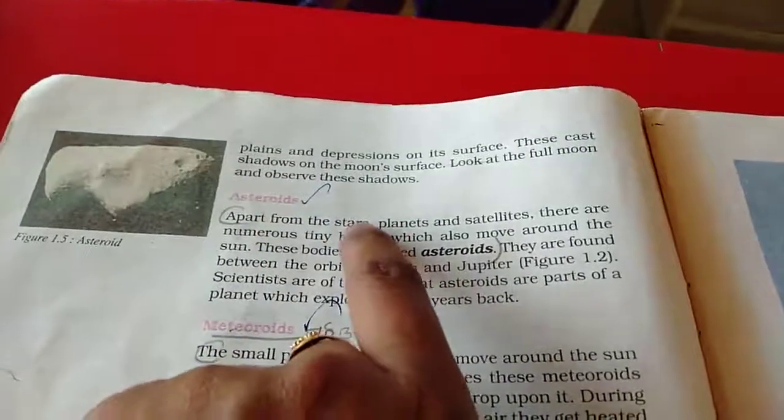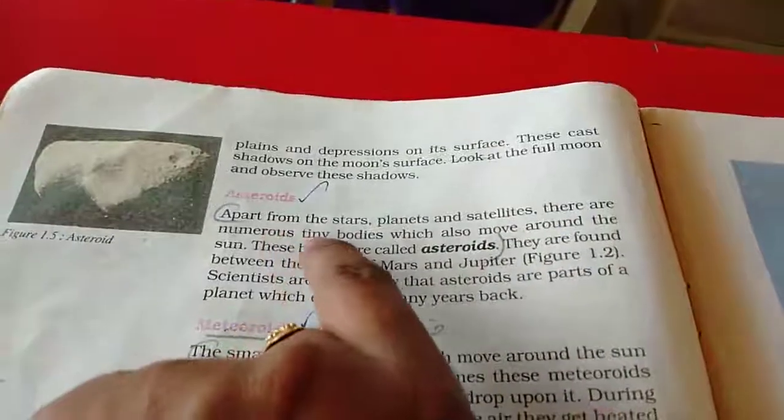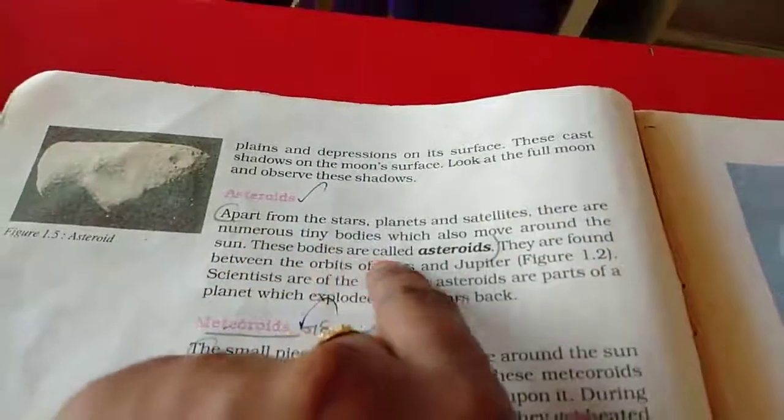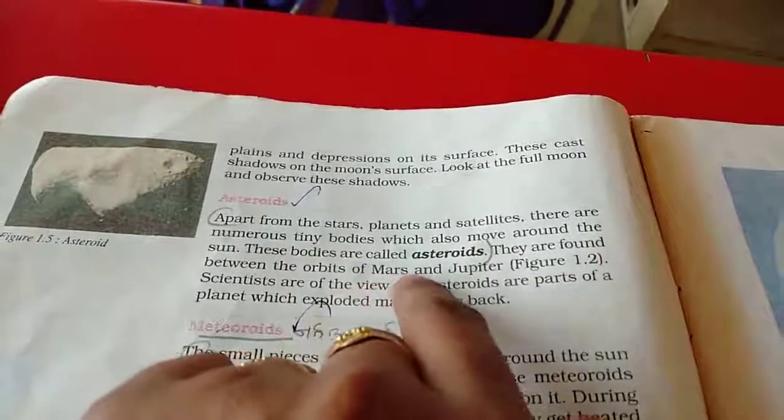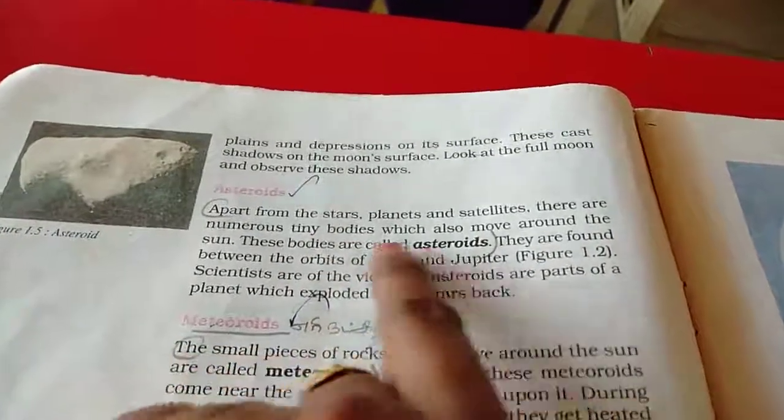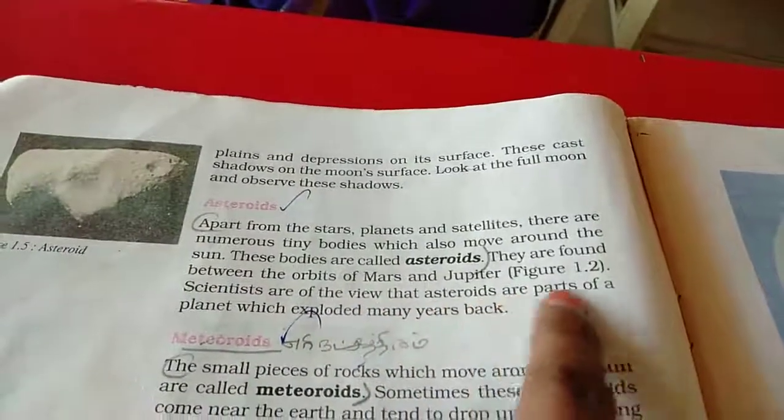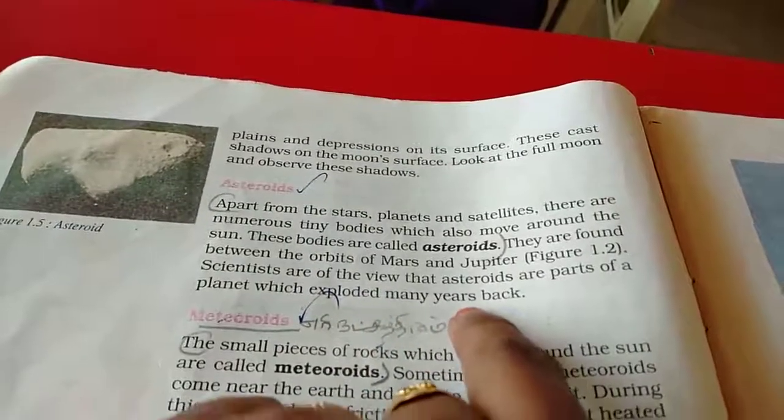Asteroids. Apart from the stars, planets and satellites, there are numerous tiny bodies which also move around the sun. These bodies are called asteroids. They are found between the orbits of Mars and Jupiter. Scientists are of the view that asteroids are parts of a planet which exploded many years back.